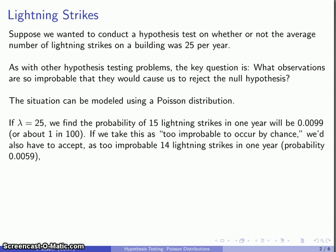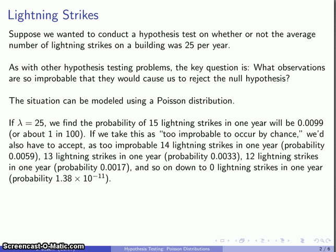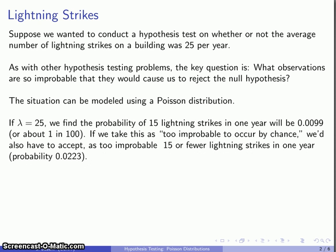For consistency, we'd also have to accept other improbable events: 14 lightning strikes in a year, 13, and so on, down to zero lightning strikes in one year. All of these we would have to consider as too improbable to occur by chance, and all of these we'd have to regard as grounds for rejecting the null hypothesis. This suggests that we might take as our rule: if we see 15 or fewer lightning strikes in one year, that's too improbable to support the null hypothesis. And we can calculate that probability — it's about 1 in 45.